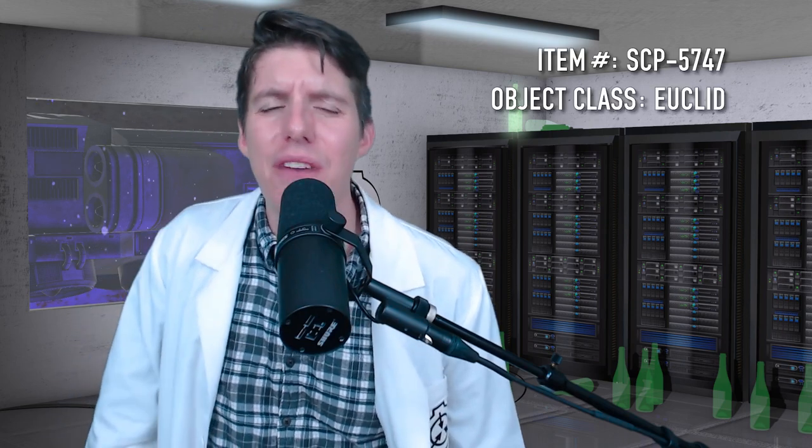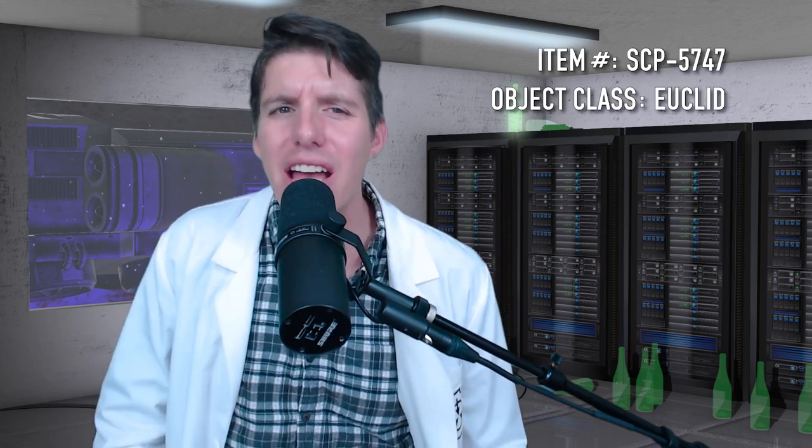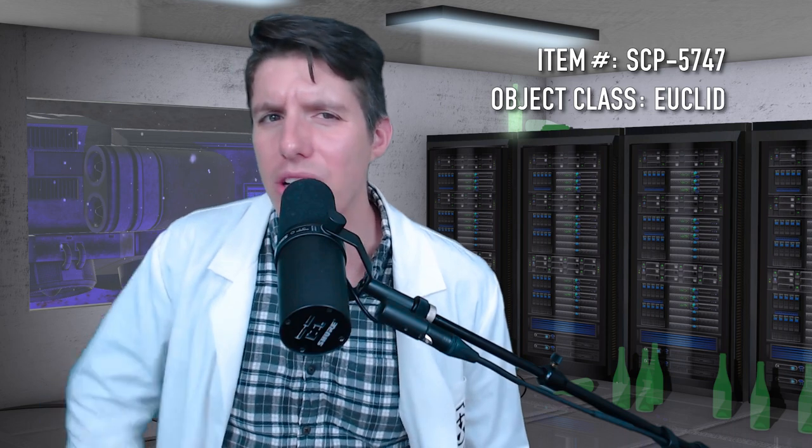Good afternoon, Foundation staff. This is Level 4 Researcher Theron Sherman, and today's briefing is easy and breezy. We're talking about SCP-5747. It's Level 2 Classified, Object Class Euclid.